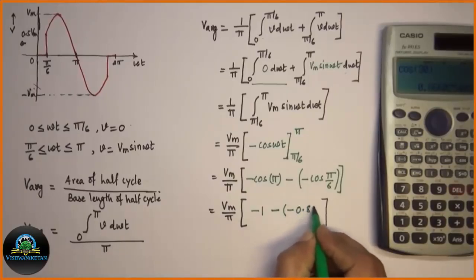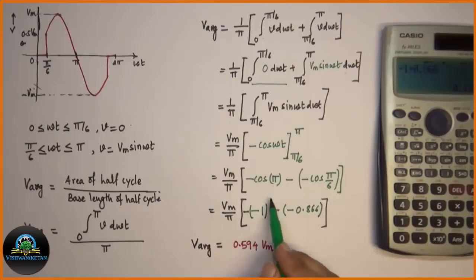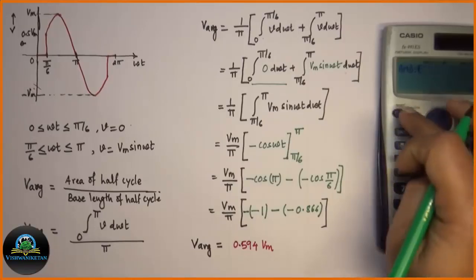By solving this finally I will get V average as Vm over pi. Cos phi substituted as minus 1. Minus of minus 1 that is plus 1. Then minus minus that is plus 0.866. So again we will get 1 plus 0.866 which is 1.86 divided by pi.